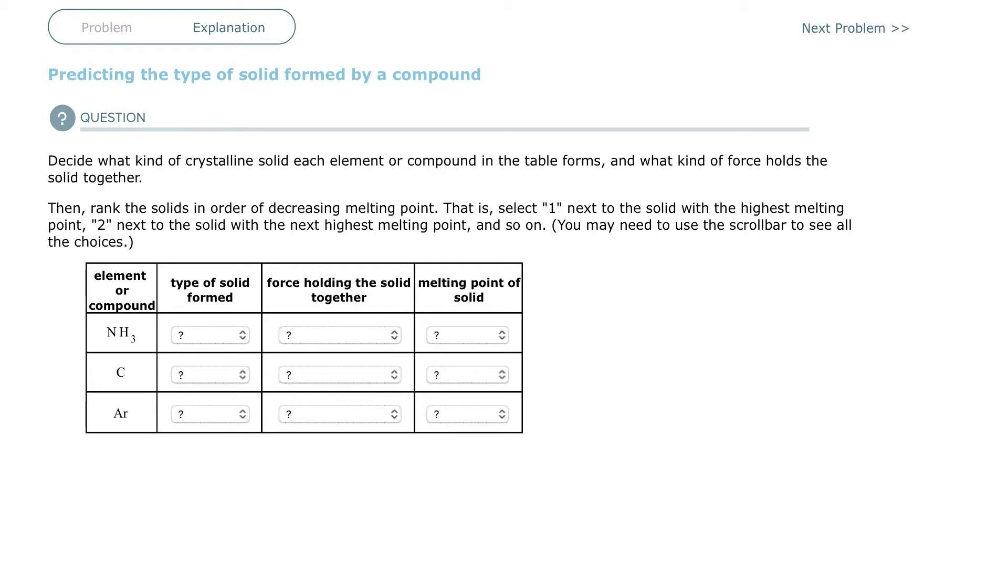Welcome back. This is an Alex training video on predicting the type of solid formed by a compound. So solids are the lowest energy of any of the phases, and in order to melt, you're going to have to get them apart from each other. And so there's different attractions that atoms or molecules will make with each other.